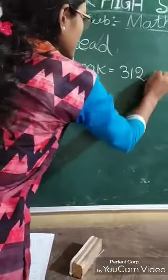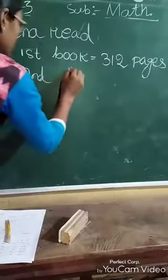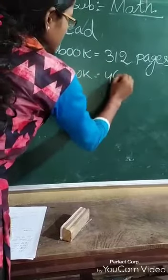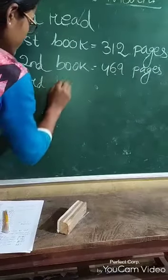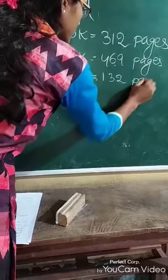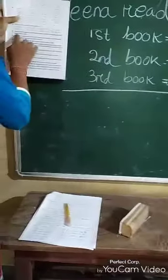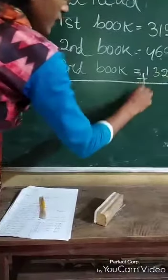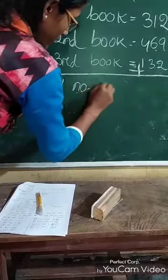First book: 312 pages. Second book: 469 pages. Third book: 132 pages. How many pages did she read total? You need to add all three numbers to find the total number of pages.